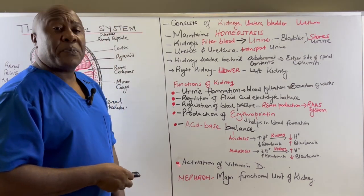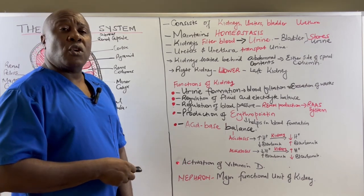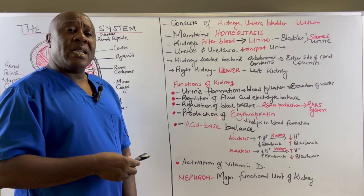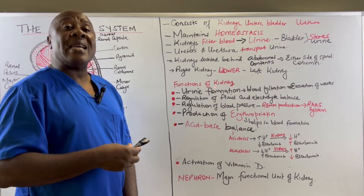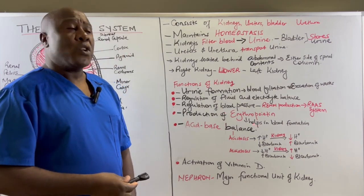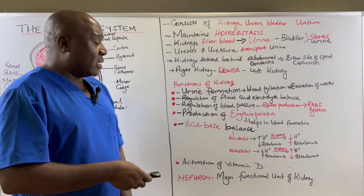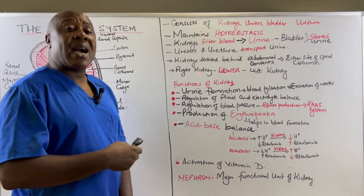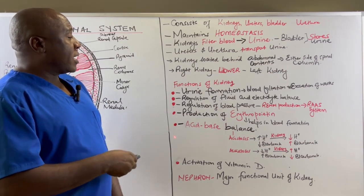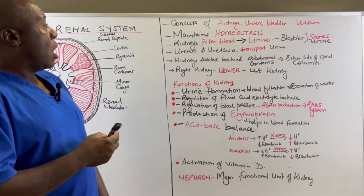Lastly, kidneys play a role in the activation of vitamin D. Vitamin D is obtained from the sun, and when obtained from the sun it is in an inactive form. When it comes into our bodies, the kidneys activate it so that it becomes useful to our body. Those are the functions of the kidneys as they help in the maintenance of homeostasis within our body.